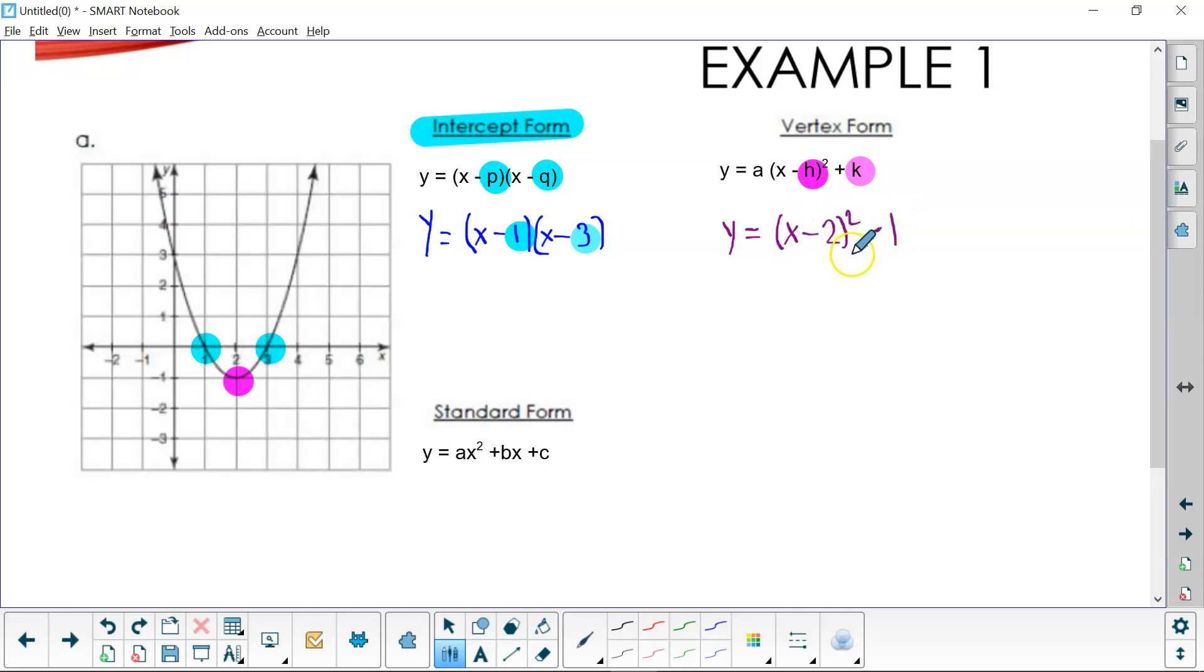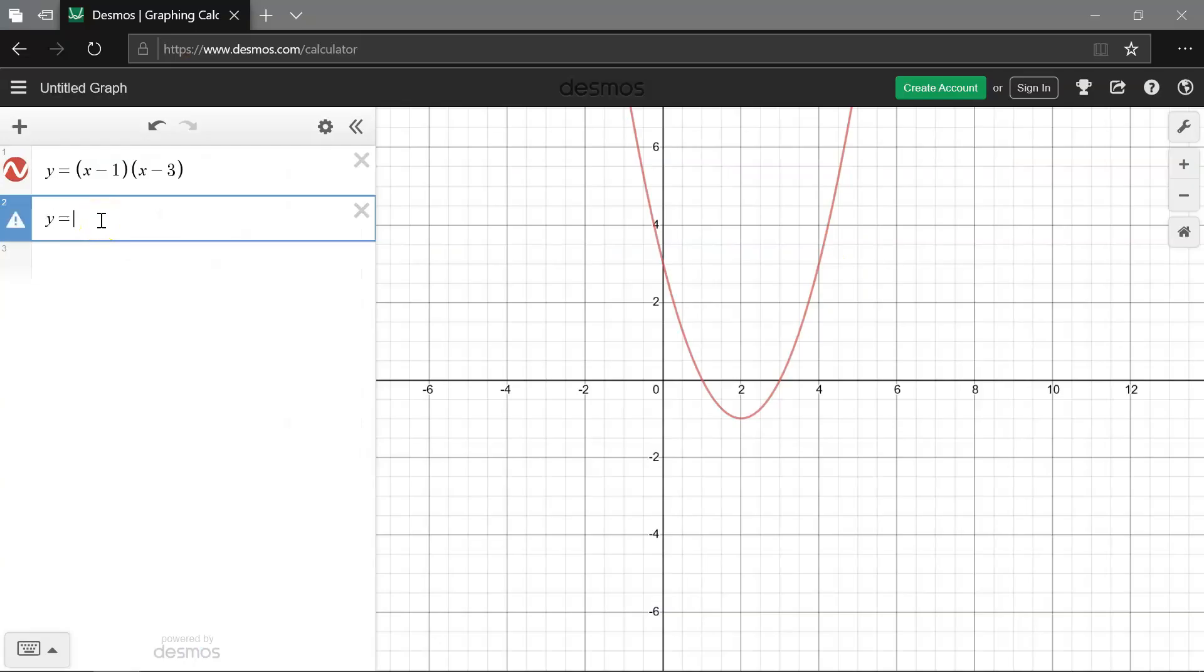So I have a two and a negative one. Let's take this over to Desmos and put it in. y = (x - 2)² minus one. So now our red graph, or our factored form, is showing as red, and then our vertex form, which says this is a graph of our vertex at (2, -1), is in blue. They're lying right on top of one another, red and blue.